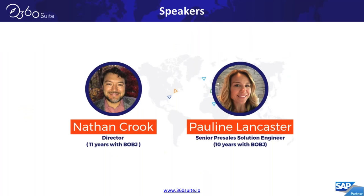My name is Nathan Crook, I'm a director here for a little over three years with GB and Smith. I've been in the Business Objects world for over 11 years, formerly worked for Business Objects and in the partner ecosystem since then. I'm joined by Pauline Lancaster — I'm a pre-sales solution engineer with GB and Smith, with over 10 years of experience. I was a Business Objects administrator and developed universes, reports, and did installs and upgrades, so I'm familiar with a lot of the challenges.